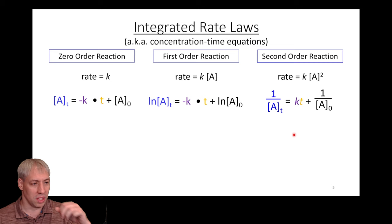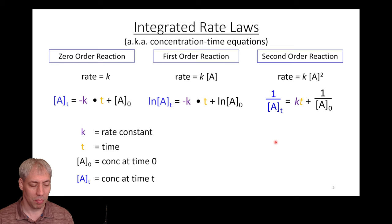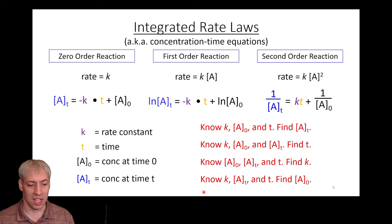The way we solve that is with integrated rate laws, also known as concentration-time equations. For a zero order reaction, rate equals K, and after doing some calculus we get: [A] = -Kt + A₀. For a first order reaction we have a different equation, and for second order we end up with yet another. This is really useful because we've changed these equations into something that gives us the relationship between the rate constant, time, initial concentration, and concentration at time t. With four variables, if you know any three, you can calculate the fourth.